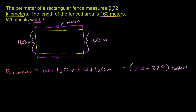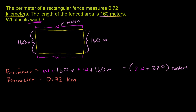They also told us that the perimeter of the fence is 0.72 kilometers. So the perimeter is also equal to 0.72 kilometers — we can abbreviate that with km. Now, if we wanted to solve an equation and set this equal to the total perimeter they gave us, we have to make sure the units are the same. Here it's in meters, here it's in kilometers.